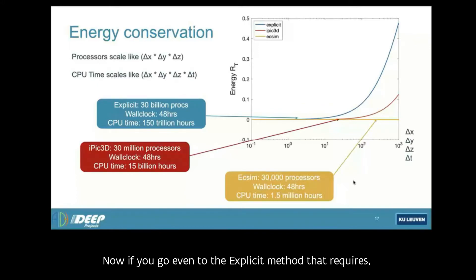Now, if you go even to the explicit method that requires, let's say, another 10 times more cells and more time steps, that would be out of the question, like 30 billion processors and 150 trillion hours. Of course, it's not possible. So I think to do the most challenging simulation, you know, not only you need the largest computers in the world, but you also need to go beyond the brute force methods, and you need to use something smarter, like the semi-implicit or the implicit methods. That's my main message when it comes to PIC.